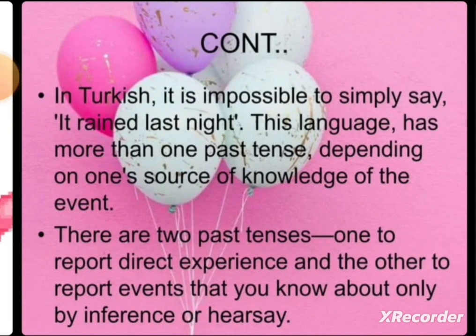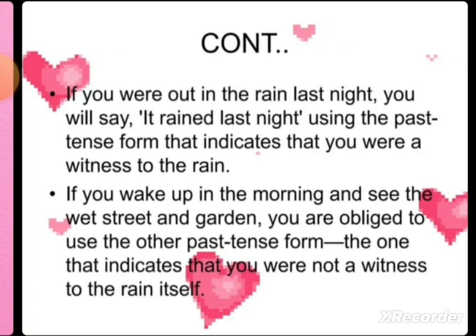In Turkish, it is important to simply say 'it rained last night,' but this language has more than one past tense depending on one's source of knowledge of the event. There are two past tenses: one to report direct experience, and the other to report events you know about only by inference or hearsay. If you were out in the rain last night, you use the past tense that indicates you were a witness. But if you wake up and see the wet street, you are obliged to use the other form — the one indicating you were not a witness to the rain itself.